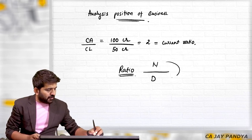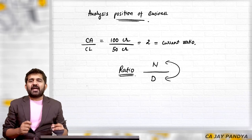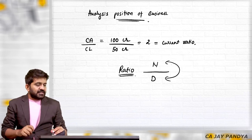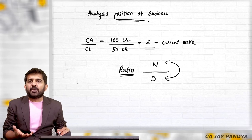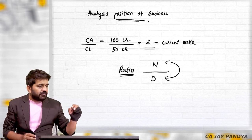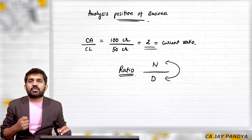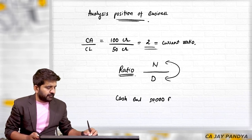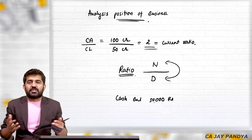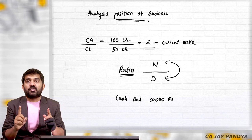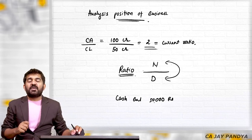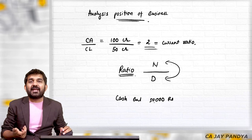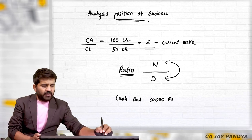The numerator is compared with the denominator so that we can make some sense and analyze the position of the business. We can analyze the position of the business not by nominal figures. One more example: say my cash balance is 50,000 rupees. Whether it is more or less, whether it is good or bad — we cannot say, because it is a nominal figure. We want a relative figure. And so we find out various ratios related to the profit and loss account and balance sheet, and try to analyze our business position with the help of these ratios.